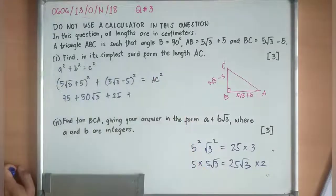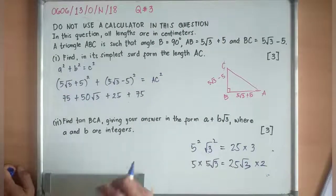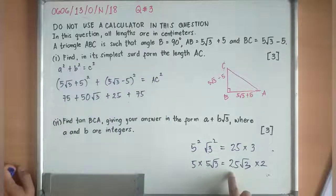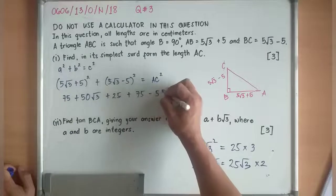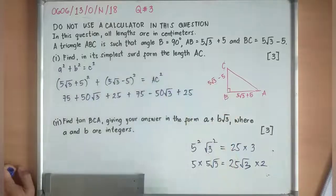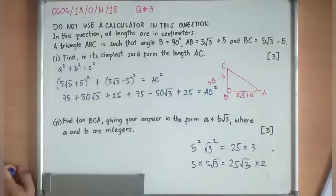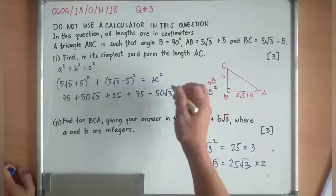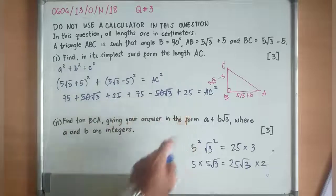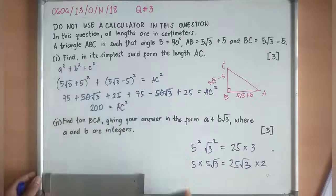Next, plus (5√3)² is of course 75. 5√3 × -5 is -25√3 × 2 is -50√3, then plus 25. It is equal now to AC². And 50√3 and -50√3 can be removed. 75 + 25 + 25 + 75 + 25 is already 200 = AC².